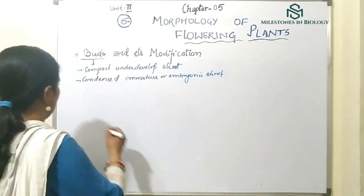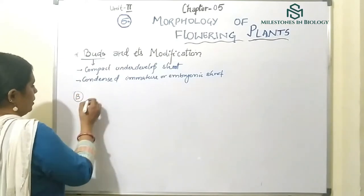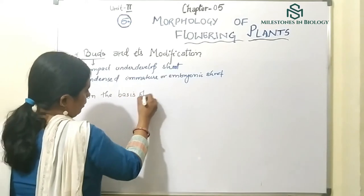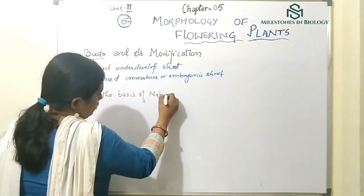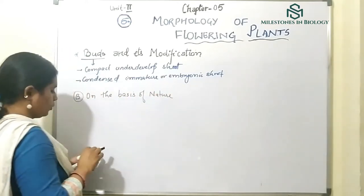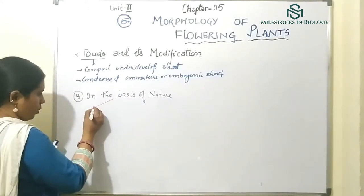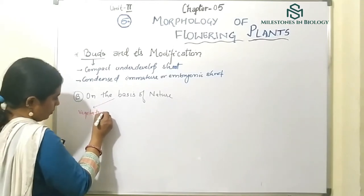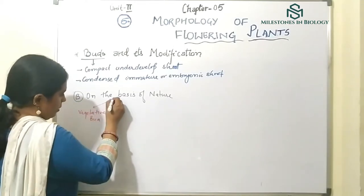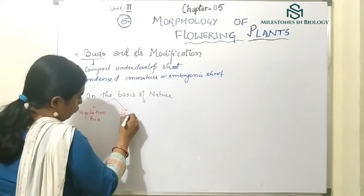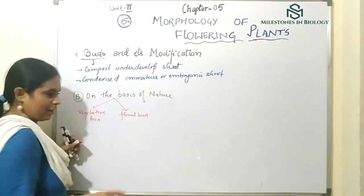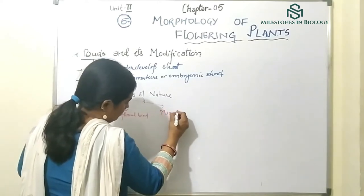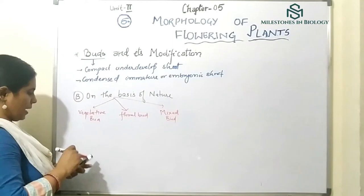The next criteria is on the basis of nature. There are three categories: vegetative bud, floral bud — from the name you can guess — and mixed bud.